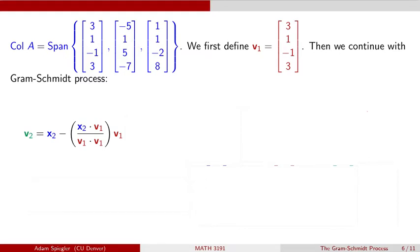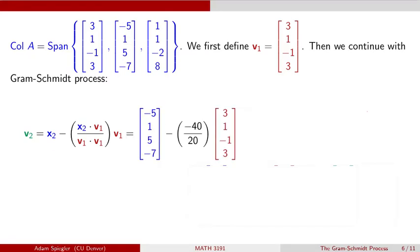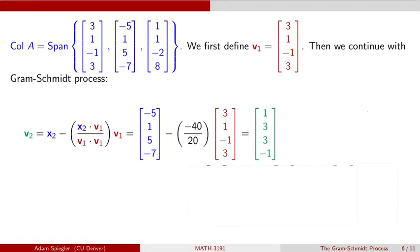All calculations are verified in the Colab document linked in the description. The vector X2 is (−5, 1, 5, −7). Taking the inner product of X2 with V1 gives −40, and the inner product of V1 with V1 gives 20, so the weight is −2. Subtracting that orthogonal projection from X2 gives the complement, which simplifies to V2 = (1, 3, 3, −1). We can check that the inner product of V1 and V2 is indeed 0, so V1 and V2 are orthogonal.